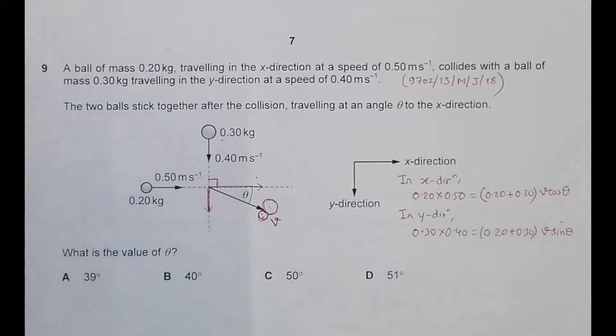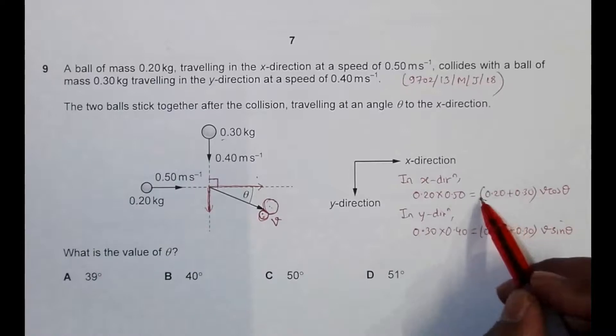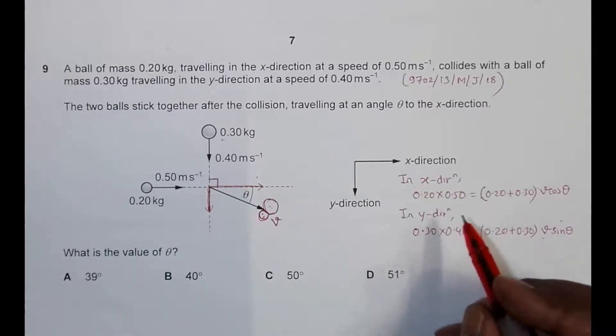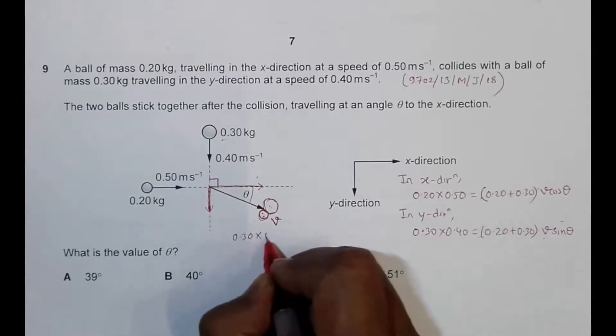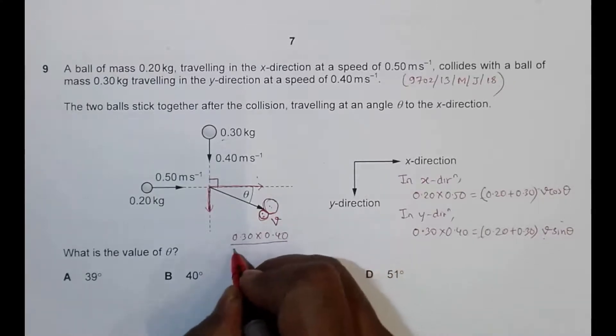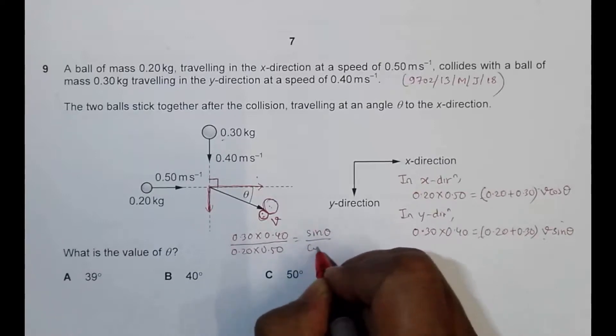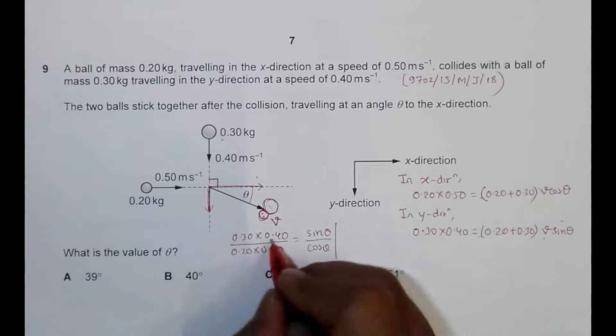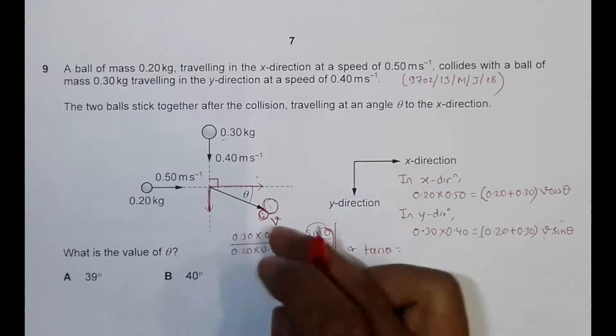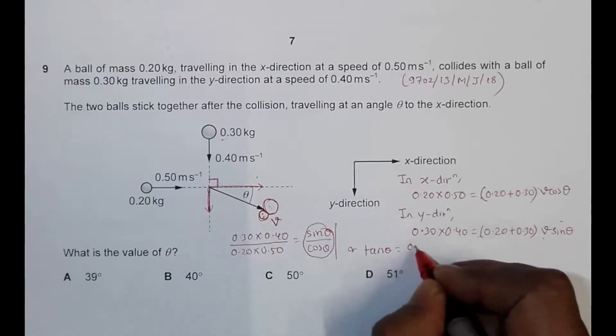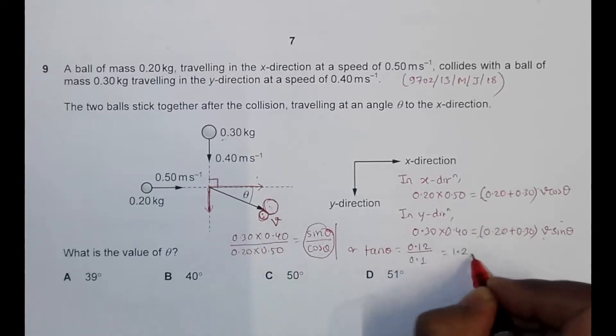Now, when we do further mathematics, if I divide this thing by this thing, this and this cancel, v and v cancel. What remains is 0.30 into 0.40 divided by 0.20 into 0.50 equals sin theta by cos theta. So this is tan theta, should be equal to, in the denominator it is 0.12, and in the numerator we have 0.1, which becomes 1.2.